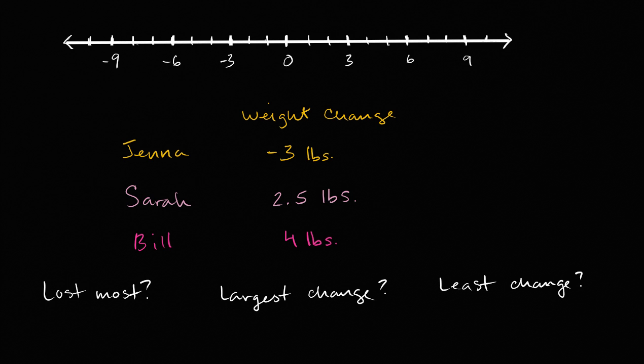So Jenna's weight change is negative three pounds. So that's Jenna right over there. I'll say J for Jenna. Sarah's weight change, and she had a weight gain, is two and a half pounds. So that's right over there. Positive two and a half pounds for Sarah. And then finally Bill gained four pounds. So that is Bill right over there.